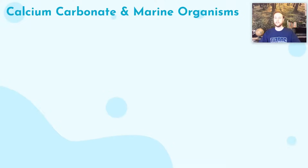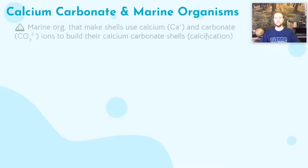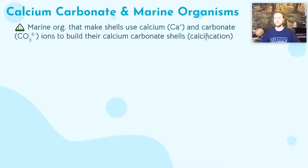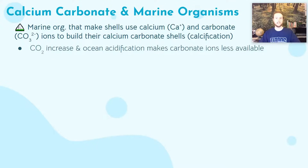Let's take a deeper look at these shell-building organisms and the impacts of acidification on them. They undergo a process called calcification, where they take in the carbonate ion along with calcium in the water — the main components that build their shells. Their shells are referred to as calcium carbonate shells. They need this carbonate ion to live and to build their shell. And as we know, CO2 increase leads to ocean acidification, making these carbonate ions less available.